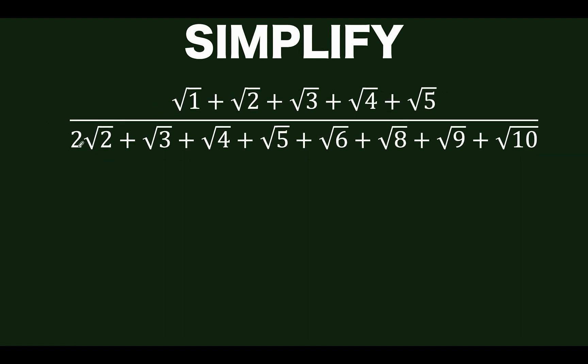First, let's look at this 2 square root of 2. That means square root of 2 plus square root of 2. Also notice that we have here square root of 9, which is equal to 3. Then replace those terms with the yellow expressions.